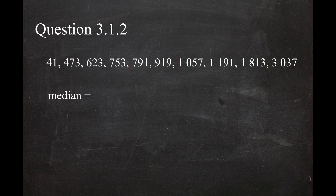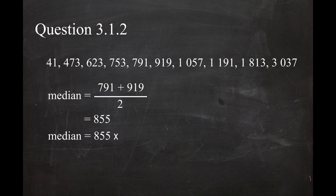The median equals 791 plus 919 divided by 2, which gives you a median of 855. Multiplying this value by 1,000 gives you a value of 855,000.